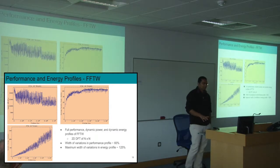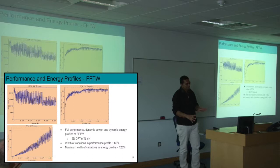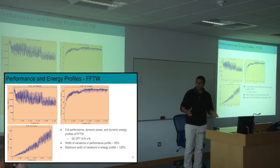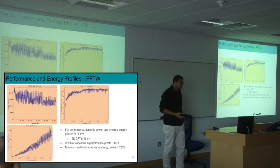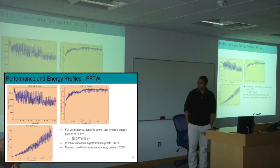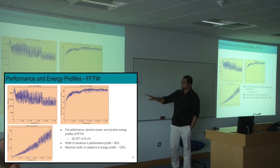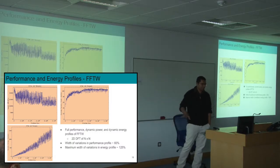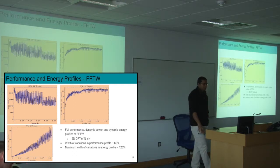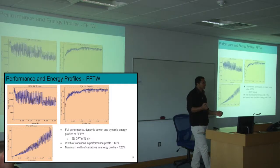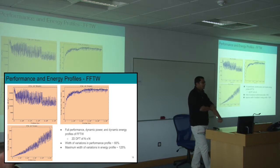Now, for Fourier transform — it's even more dramatic. The average width of variations here is 60%, and the maximum width of variations in the energy profile is 125%. An algorithm can tap into these variations to create a heterogeneous workload distribution and potentially achieve 125% savings in energy by tapping into these variations.